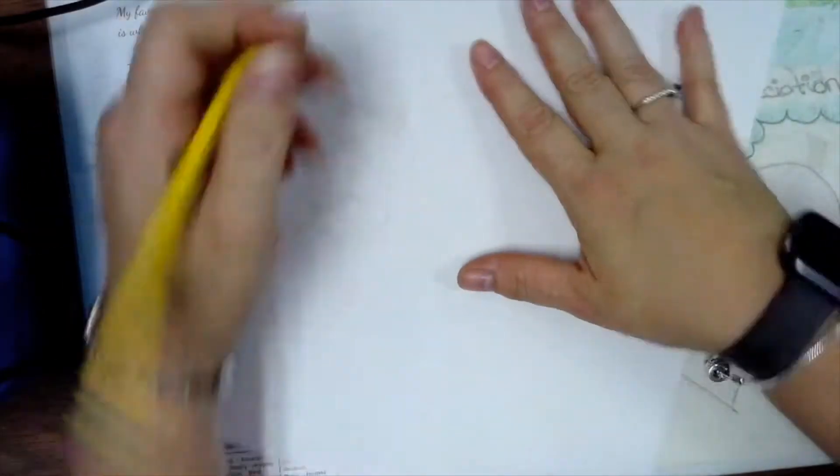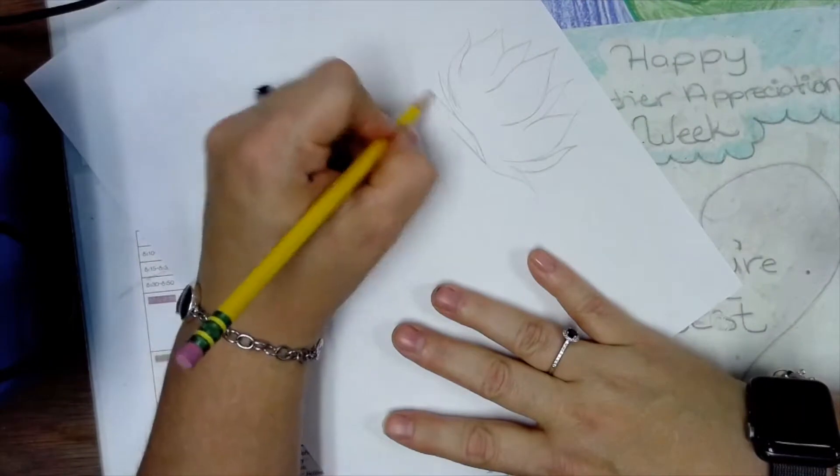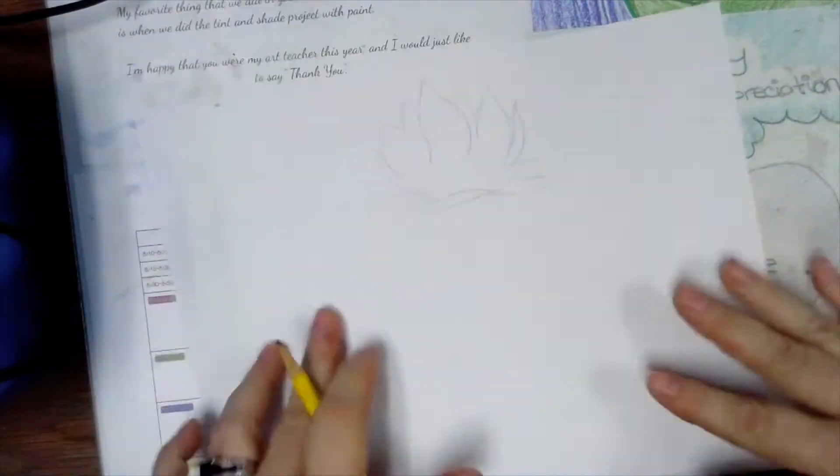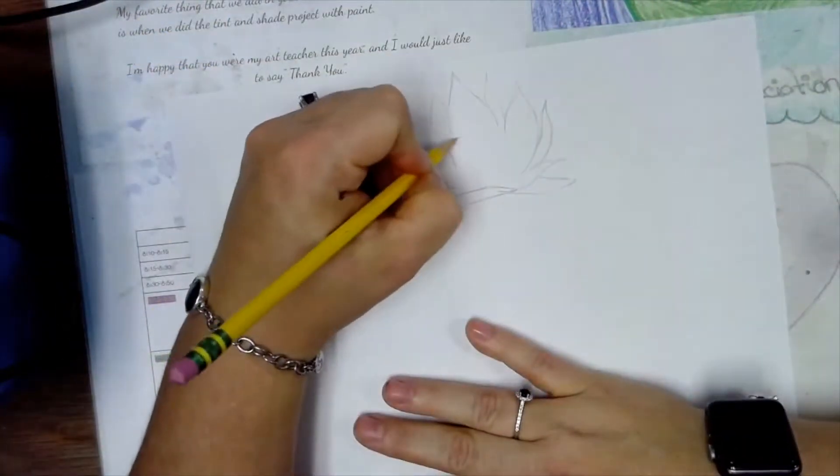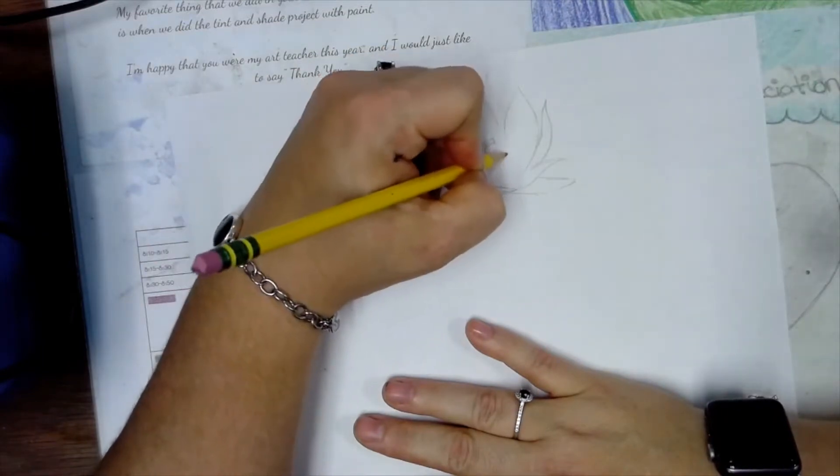Then draw another S-curve on the other side to connect the two at the top, and whatever it is that you're drawing the fire on is what it connects to with the bottom.